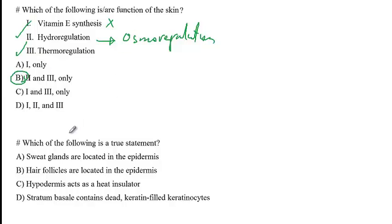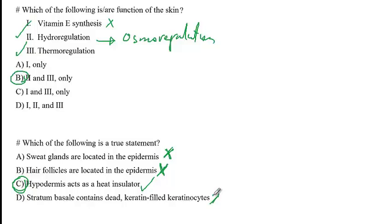The second question asks which statement is true. Sweat glands are located in the epidermis — wrong, they are in the dermis. Hair follicles are located in the epidermis — wrong, they are also in the dermis. Hypodermis acts as a heat insulator — correct, because hypodermis has many fat cells providing insulation and energy storage. Stratum basale contains dead keratinocytes — incorrect, that describes stratum corneum, the most superficial layer.